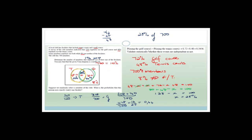Now we validate whether these events are independent. The probability of tennis intersected with golf must equal the probability of tennis multiplied by the probability of golf. We calculated the intersection as 28 percent, which is 0.28. The product of the two probabilities was given as 0.72 times 0.48, which equals 0.346. Since 0.28 does not equal 0.346, the events are not independent.